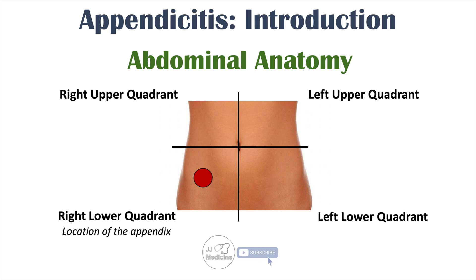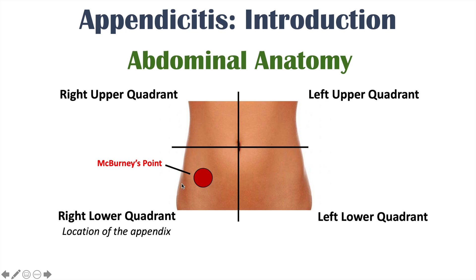More specifically, the appendix is located at a point known as McBurney's point, where in the majority of patients the appendix is found. To find this point, a clinician will feel for the anterior superior iliac spine — the uppermost protrusion of your hip bone — and draw an imaginary line from that point to the umbilicus. McBurney's point is one-third the distance from the anterior superior iliac spine to the belly button.